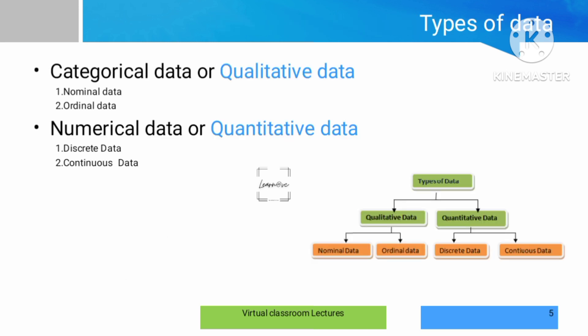Types of data: majorly it is categorized into two — qualitative data and quantitative data. Qualitative data is again categorized into two: nominal data and ordinal data. In quantitative data there are two forms: discrete data and continuous data.